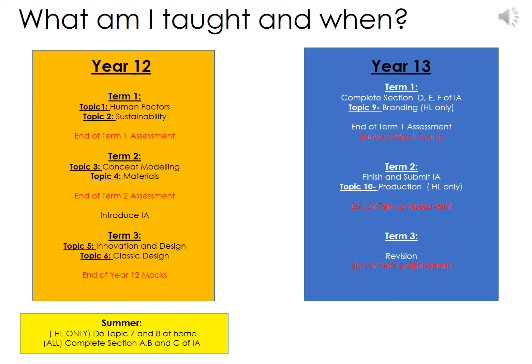If you take the HL option, over the summer you will be expected to do some work on topics seven and eight, and all students will continue with their IA. Year 13 is very similar in structure. Term one focuses on completing the whole IA and continuing remaining sections, while HL students begin topic nine, which is branding. Term two covers topic ten, which is production processes. Term three has limited time so the focus is on revision, followed by the final end of year examinations.